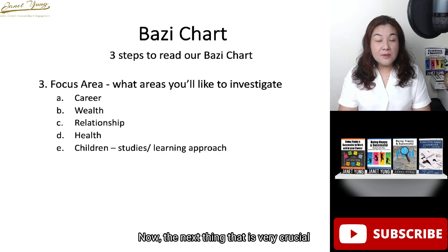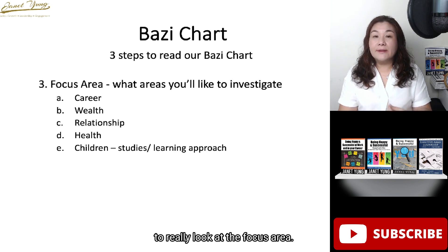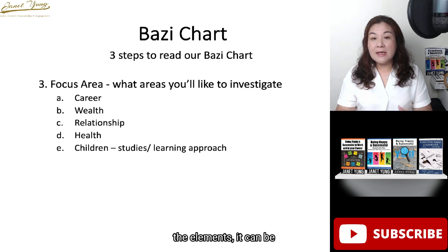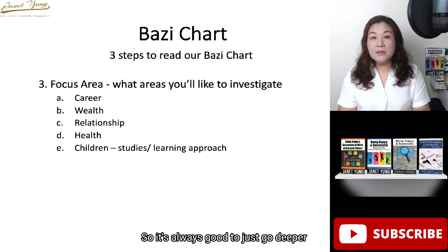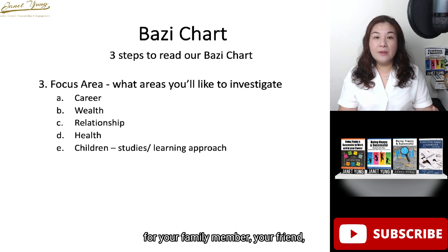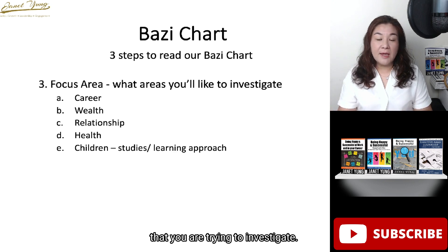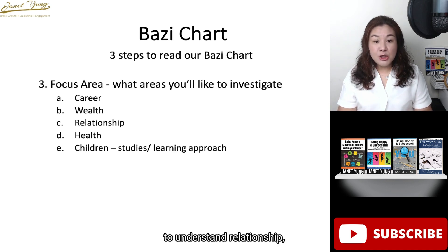Once we have better awareness of ourselves and our characteristics, the next thing is to look at the focus area. There are many things to look at in a traditional Ba Zi chart, so if you try to look at all the elements it can be very confusing. It's always good to focus deeper on one area. We can look at the Ba Zi chart to understand career, wealth, relationship, or health. For parents, when I do charts for their children, they also want to know how their children learn and whether they are motivated in studies.